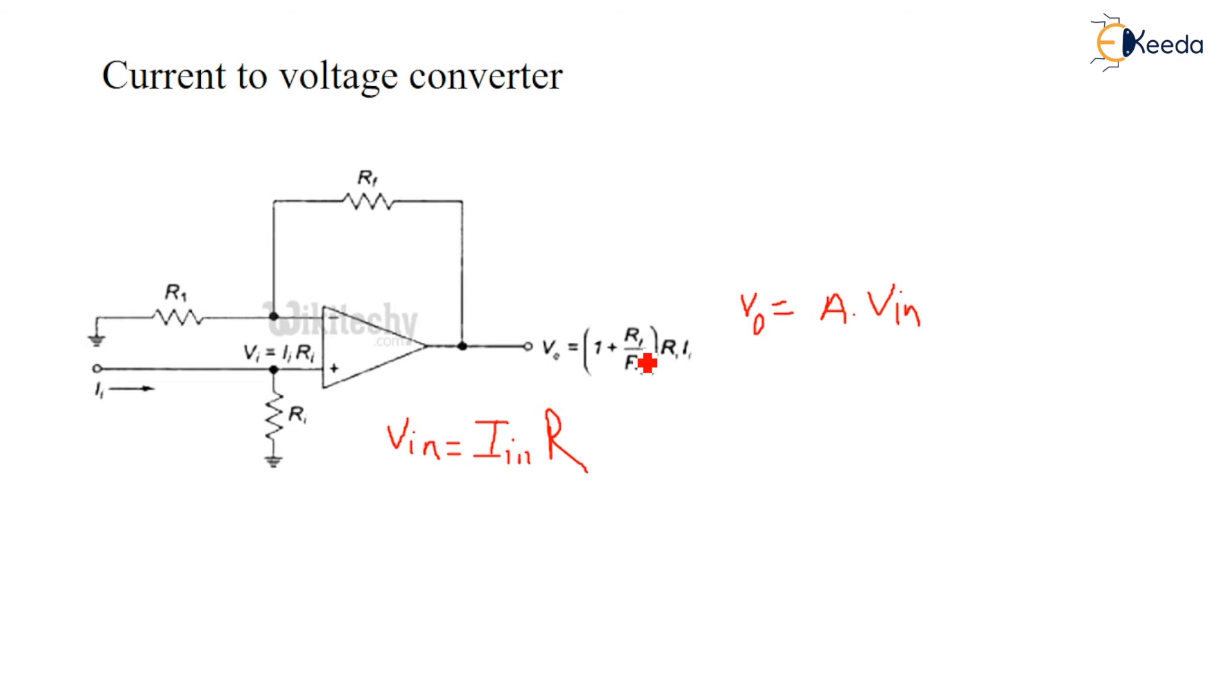In simple words we can say the output voltage is equal to gain into input current. So the sensitivity of current to voltage converter, the gain of this converter, is equal to minus RF if it is inverting amplifier and if it is non-inverting amplifier, it is RF. The magnitude of gain is also called the sensitivity of current to voltage converter. Here we conclude that the output voltage is proportional to input current.